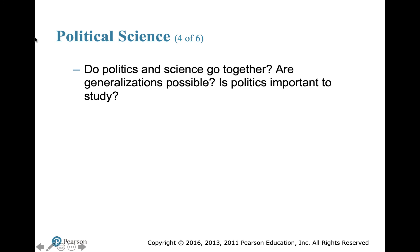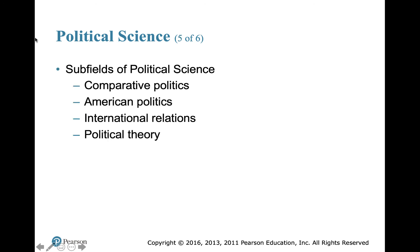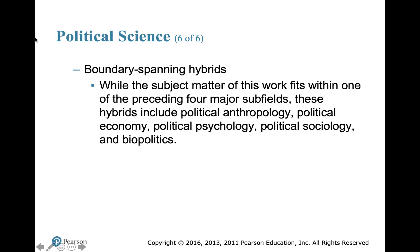Do politics and science go together? Can we generalize things? Is politics important to study? There are different subfields of political science: comparative politics compares countries against one another, American politics examines how the three branches of government interact and the system of checks and balances, and international relations covers diplomacy. Political theory covers philosophers like Locke, Hobbes, Rousseau, and Machiavelli, and how they've interpreted political issues throughout history.